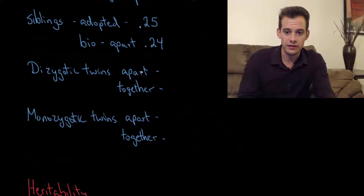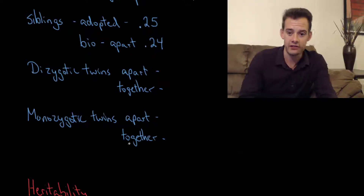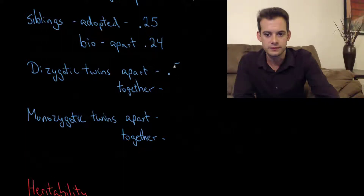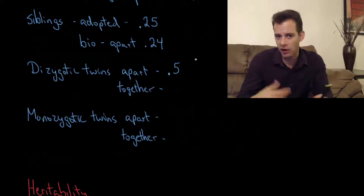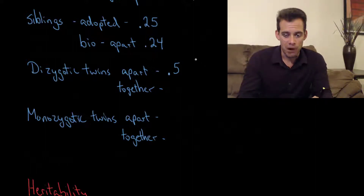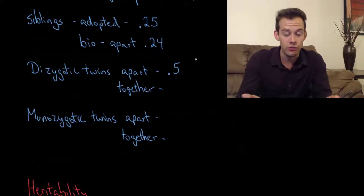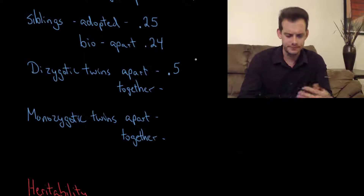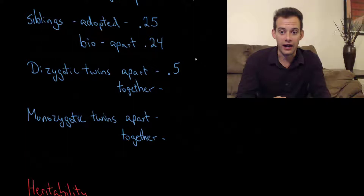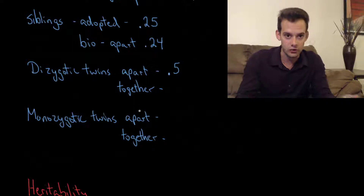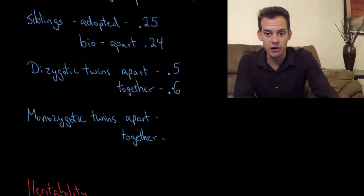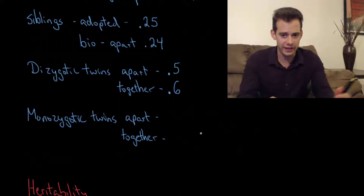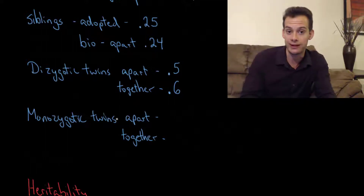We can look at dizygotic twins raised in separate homes versus dizygotic twins raised together. When dizygotic twins are raised apart we have a correlation of about 0.5. Part of this higher correlation is because environment also includes the womb — dizygotic twins have a more similar, essentially identical, prenatal environment. That might explain why they show higher correlation than normal siblings even though normal siblings also share 50% of their genes. When dizygotic twins are raised in the same house, we have an even stronger correlation of about 0.6, suggesting the environment is making their IQs even more similar, supporting environmental influence.